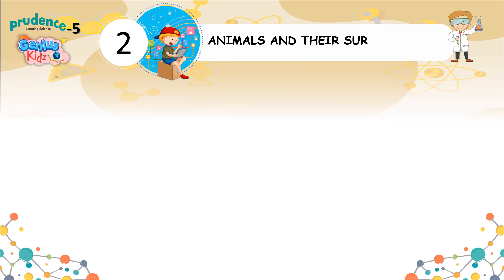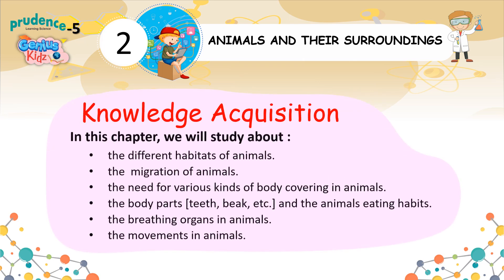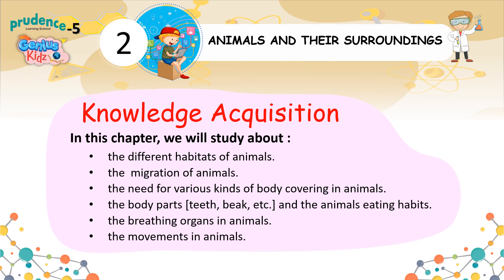Animals and Their Surroundings — Knowledge Acquisition. In this chapter, we will study about the different habitats of animals, the migration of animals, the need for various kinds of body covering in animals, the body parts — teeth, beak, etc. — and the animals' eating habits, the breathing organs in animals, and the movements in animals.